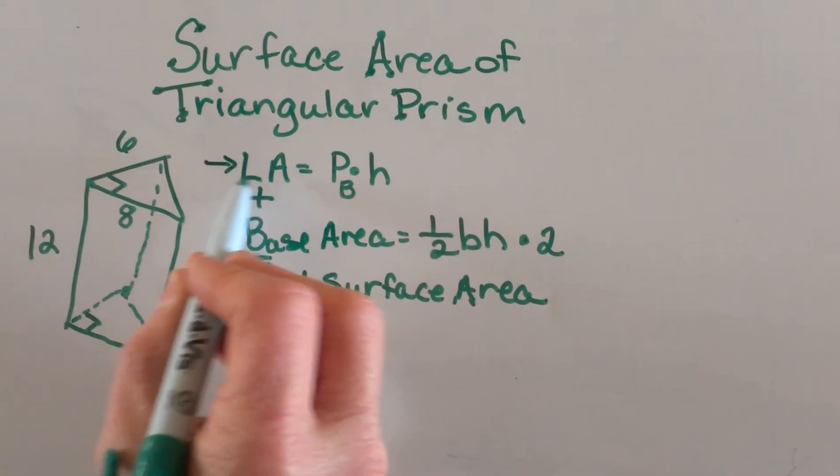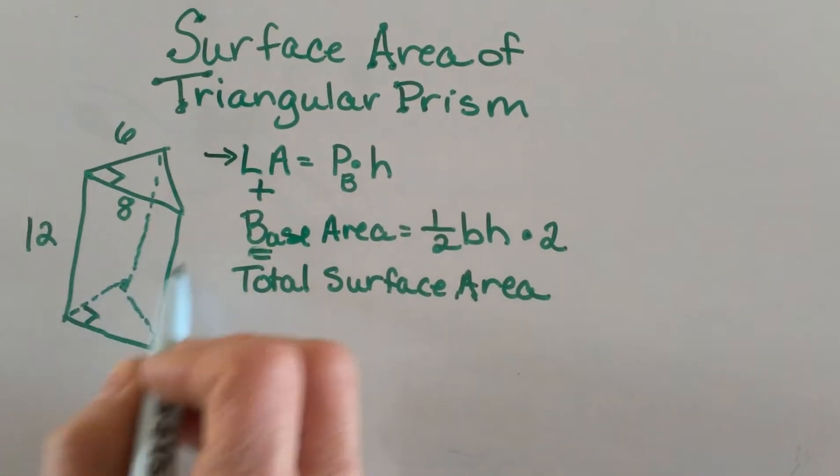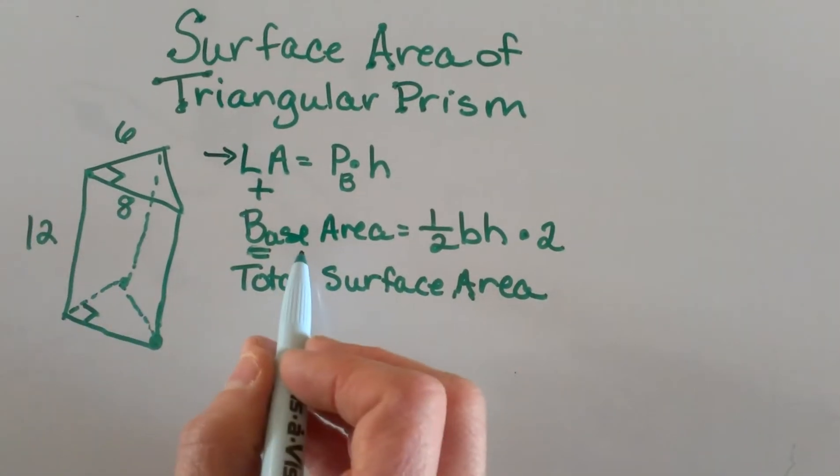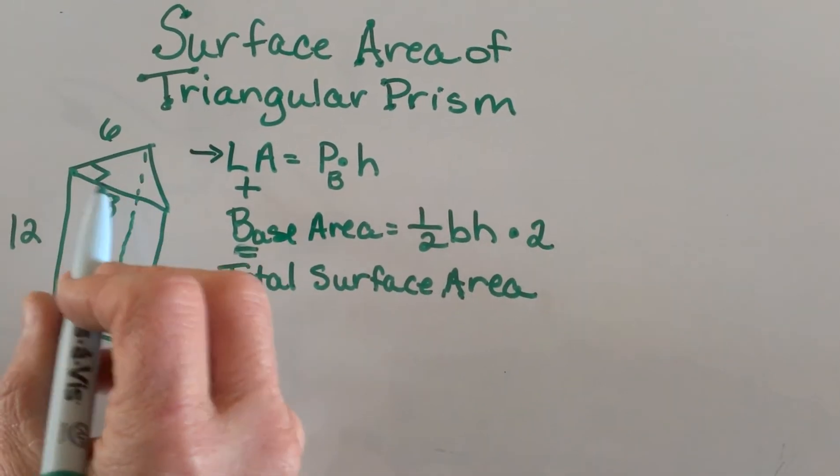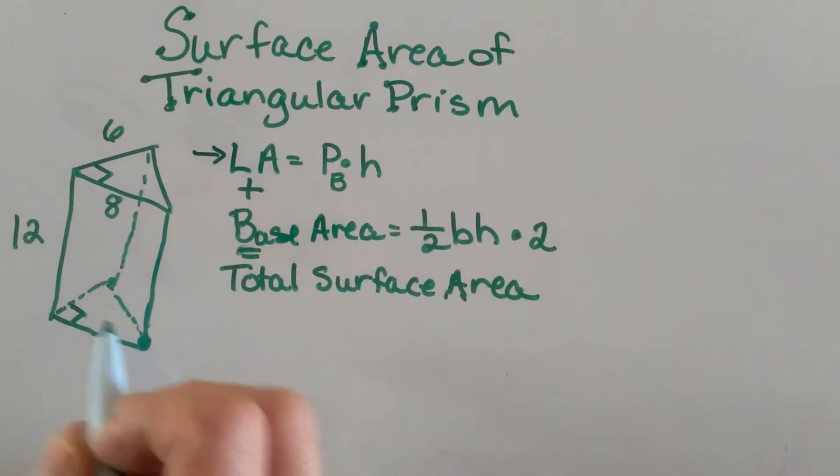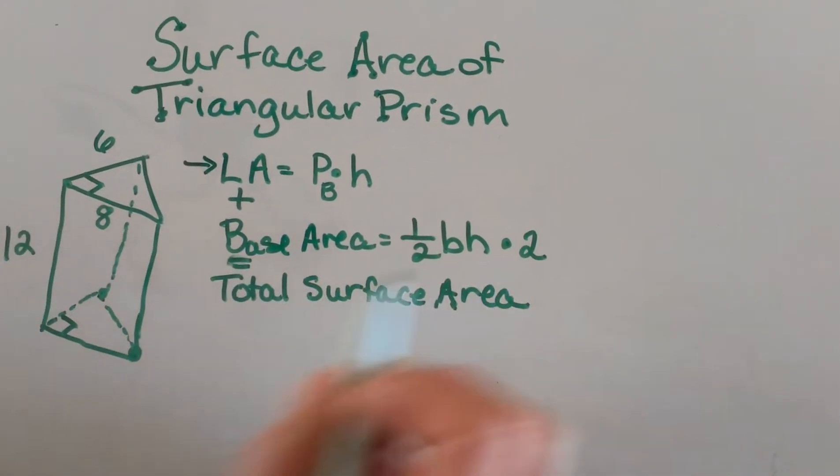We have to find the lateral area, abbreviated as LA, which is the sides that go around it. Then we add base areas. Since this is a prism, it has two bases - a top base and a bottom base - so we account for two of those in our equation. Once we get those areas, we're going to add them up.